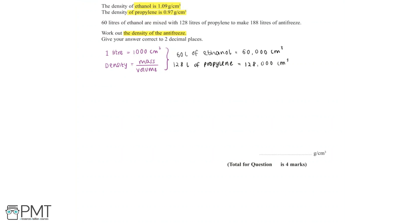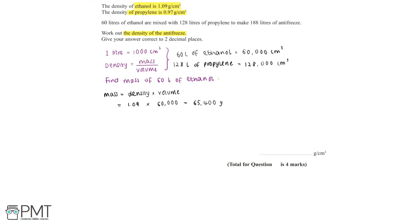Using our formula, mass equals density multiplied by volume. To find the mass of 60 litres of ethanol, we do 1.09 multiplied by 60,000 centimetres cubed, which equals 65,400 grams. For propylene, we do 0.97 multiplied by 128,000, which gives a mass of 124,160 grams.